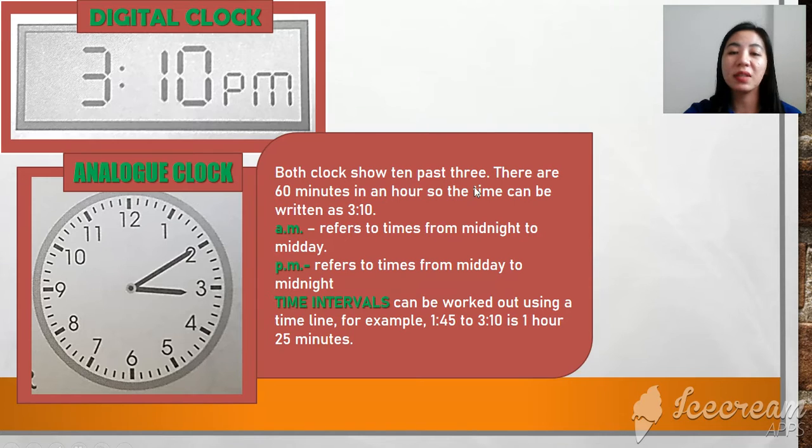For analog clock, it shows like this. Both clocks show 10 past 3. 10 past 3. So it means 3:10.